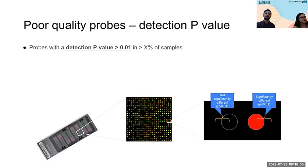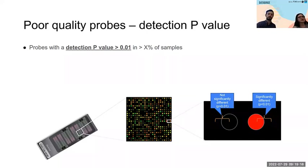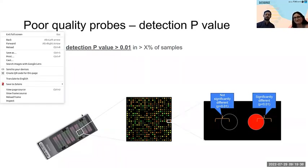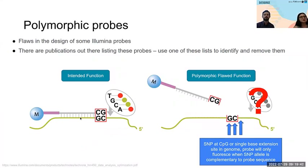The types of probes you may want to remove: first, those called poor quality. The probe fluorescence — which is how the array measures DNA methylation — is not reliably distinguishable from background fluorescence. You can quantify this with a detection p-value. A significant p-value means the probe is significantly different from background — that's a good probe. Anything not significantly different from background is a poor quality probe, meaning high detection p-value in a certain percentage of samples.